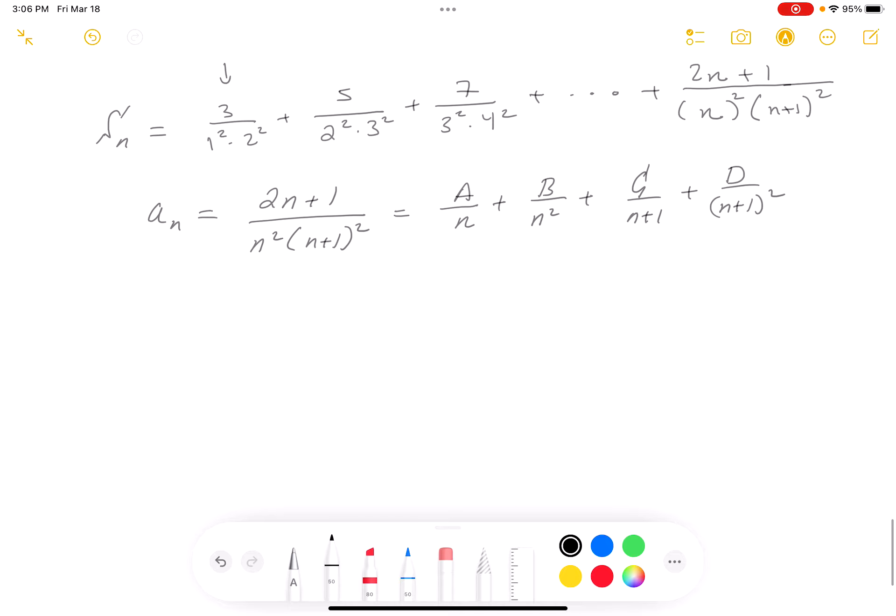I'm going to multiply both sides by the LCD and you're going to get 2n+1 = a·n(n+1)² + b(n+1)² + c·n²(n+1) + d·n².